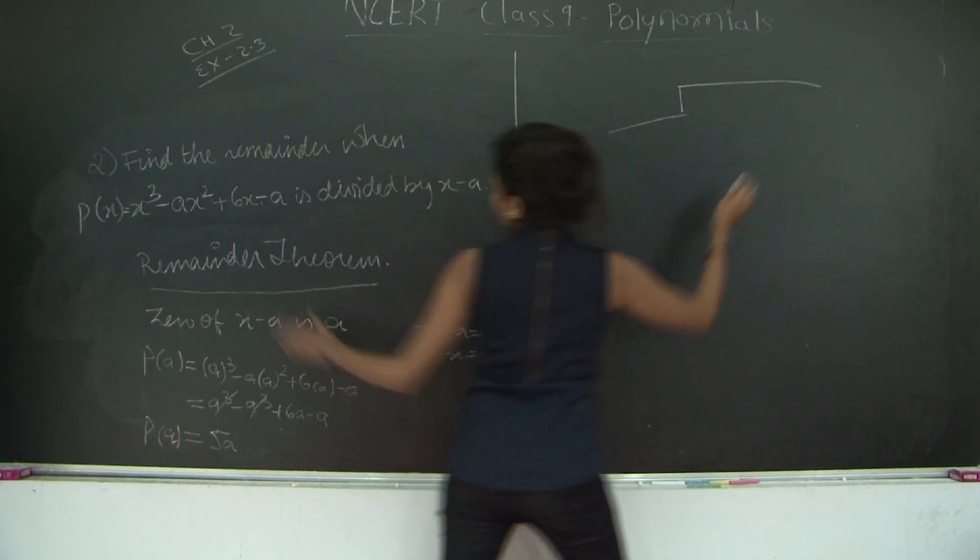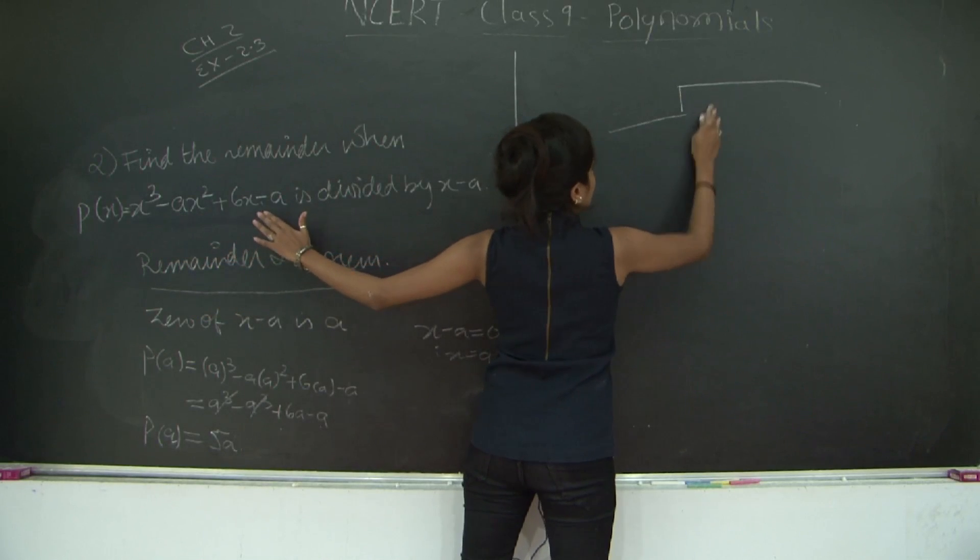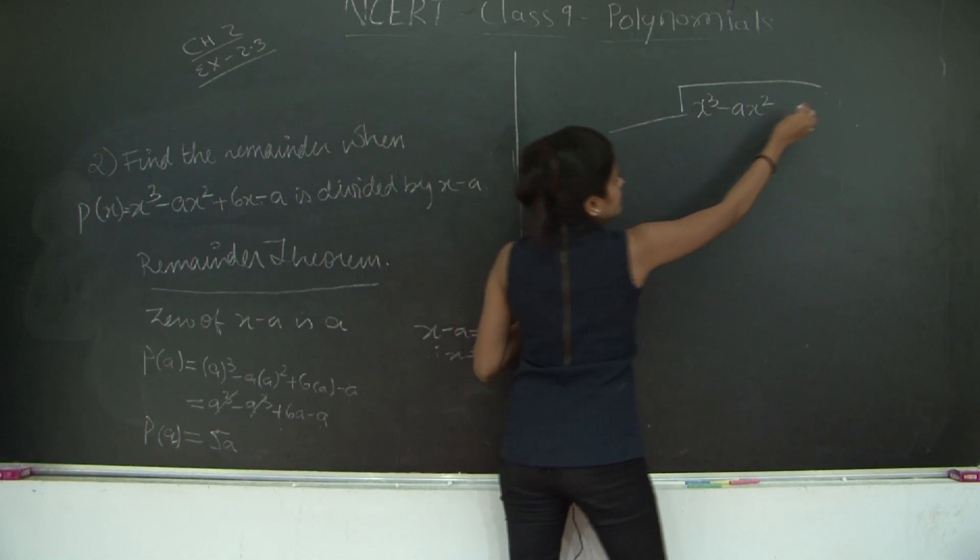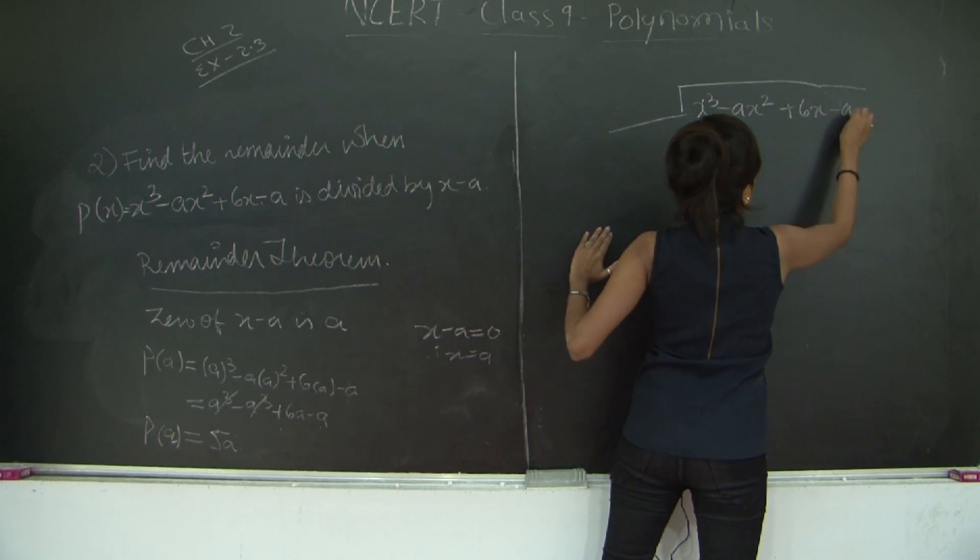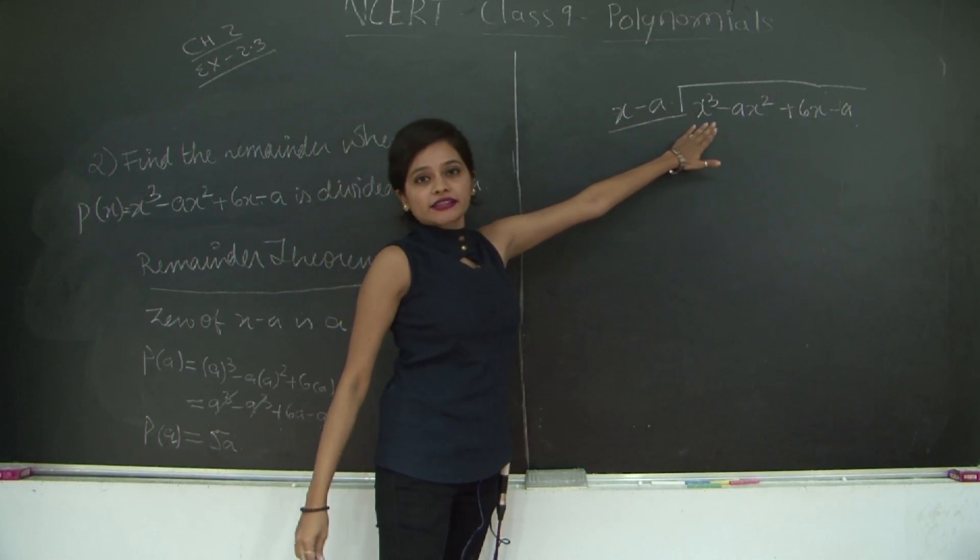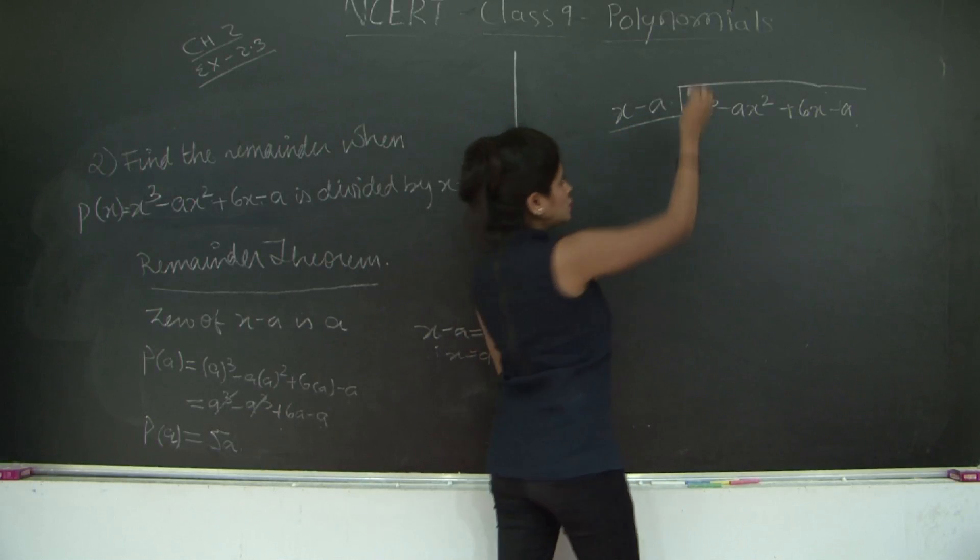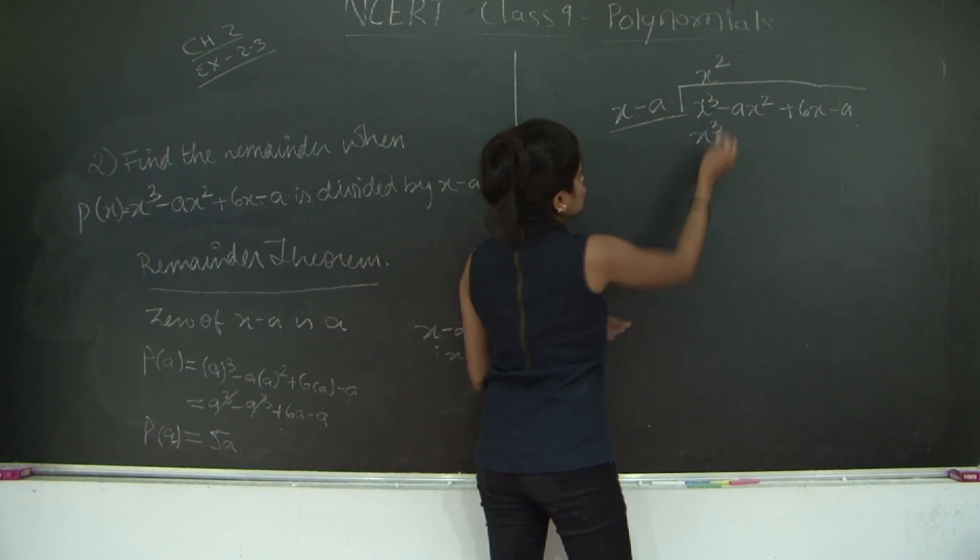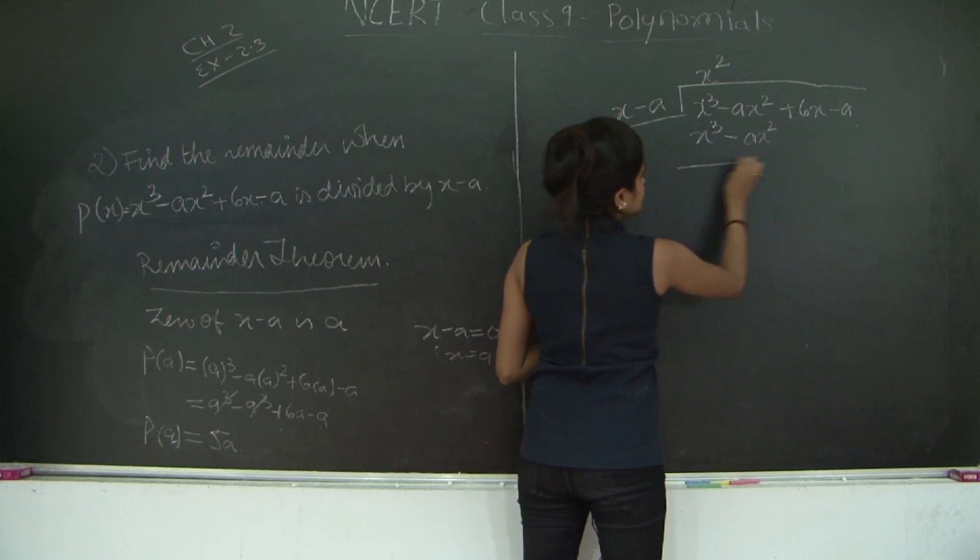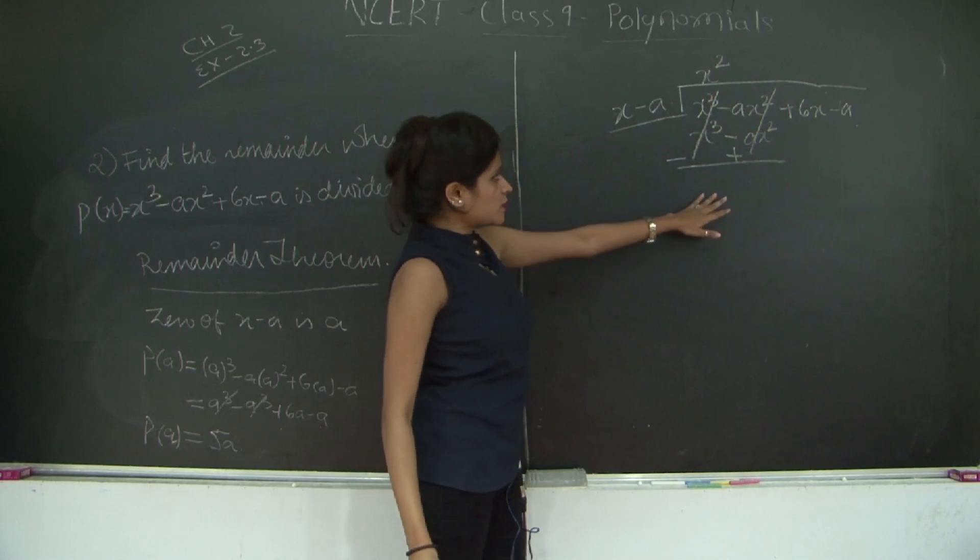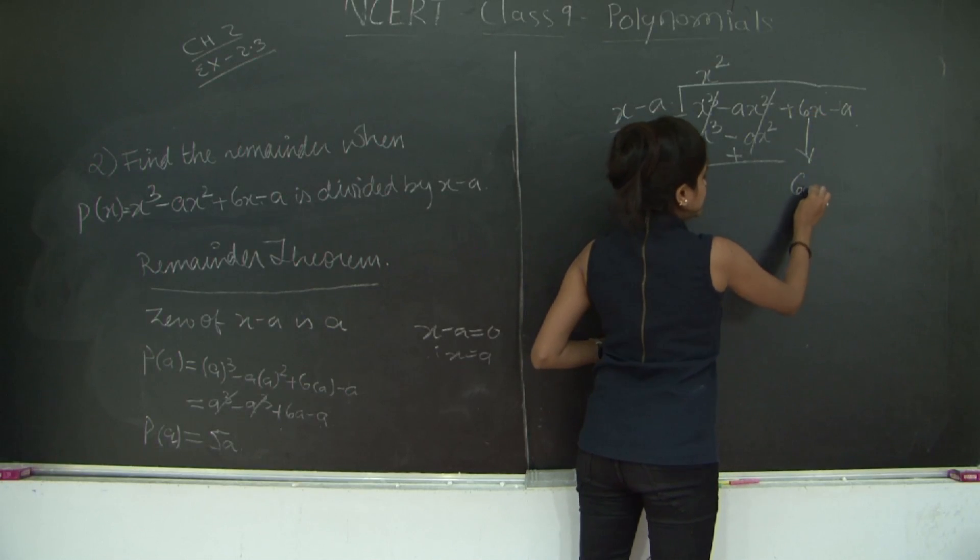I write my polynomial which is x³ minus ax² plus 6x minus a and you need to divide it by x minus a. Now x minus a into what is going to give me x³? Clearly x times x². So this is going to give me x³. x² into minus a will give me minus ax². This becomes negative, this becomes positive. Signs change. This cancels out and this term cancels out as well. And this is 0. So I get down 6x.